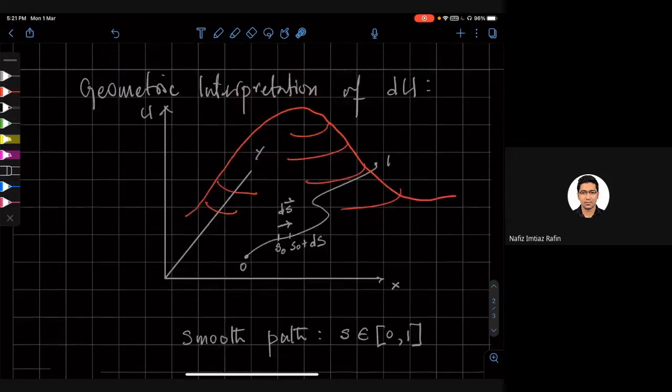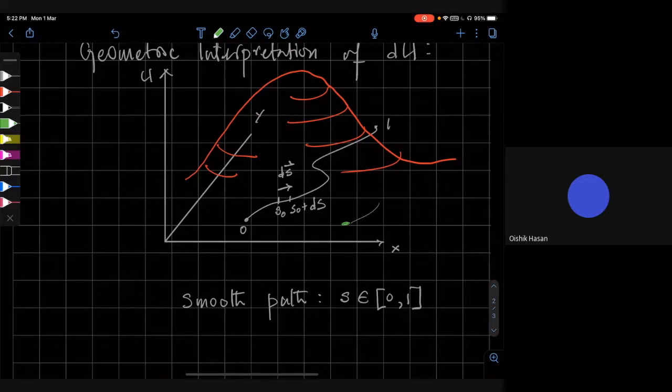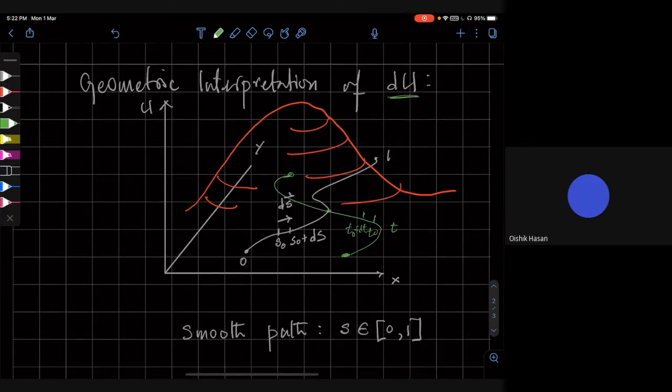So the change du will depend on this little vector ds. Is that clear? If you chose a different path, suppose I chose a different path, say, something that went from here to, say, here. And let's call that, let's parametrize that path, let's say, t. Then as I go from, say, t zero to t zero plus dt, you know, that there will be a different change of du. Even at this intersecting point, depending on which direction, if you're going this direction, or if you're going this direction, the du will be different, okay?